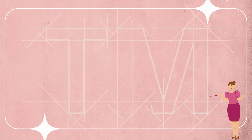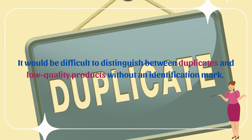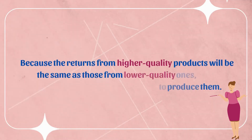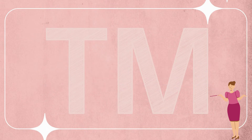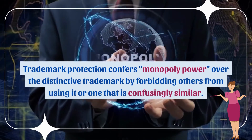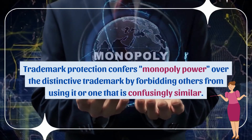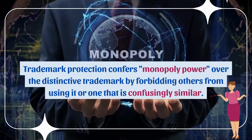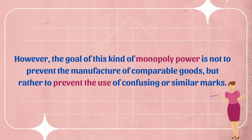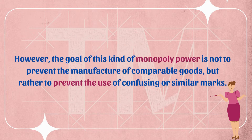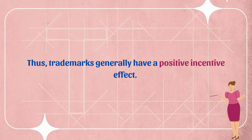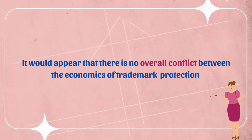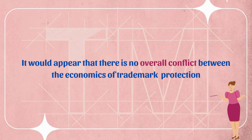Trademarks encourage companies to improve the caliber of their output. Without an identification mark, it would be difficult to distinguish between duplicates and low-quality products, because the returns from higher-quality products would be the same as those from lower-quality ones, making corporations less inclined to produce them. Trademark protection confers monopoly power over a distinctive trademark by forbidding others from using it or a confusingly similar mark. However, the goal is not to prevent the manufacture of comparable goods but to prevent the use of confusing or similar marks, giving trademarks generally a positive incentive effect.